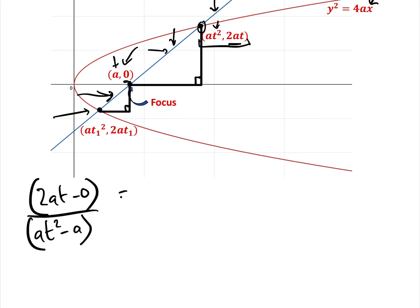over at squared minus a, which is basically the x-coordinate of this point here and the focus. Then we're going to say it's equal to the gradient of the smaller triangle, equals 0 minus 2at1, which is the y-coordinates there, over a minus at1 squared. Now all we've got to do is simplify this.